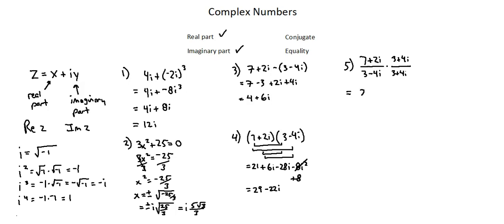In the numerator, seven times three is 21. Seven times four i is 28i. Two i times three is six i. And two i times four i is eight i squared.